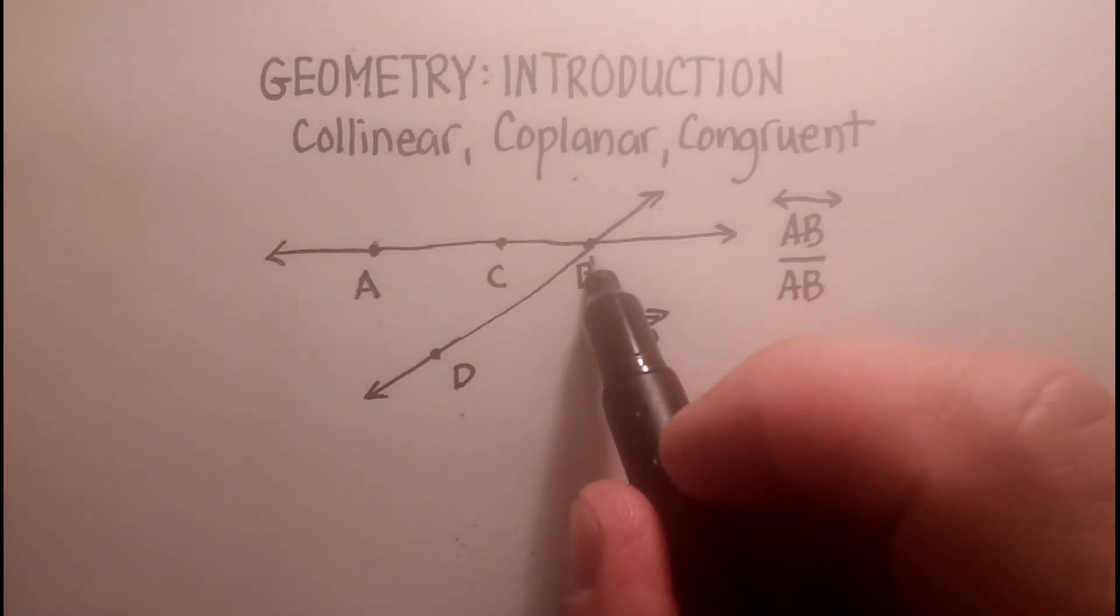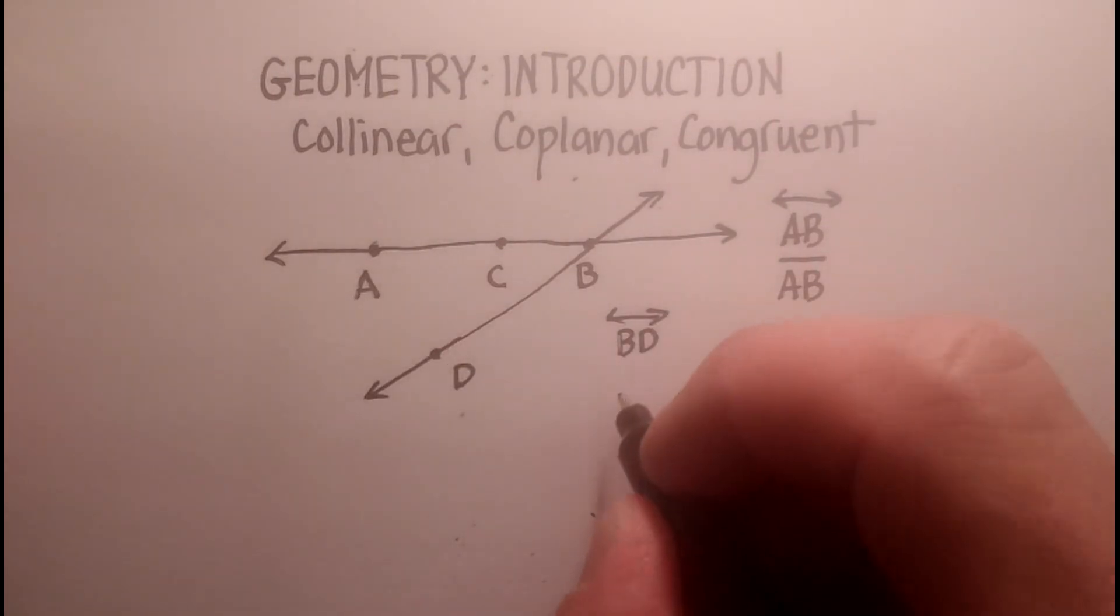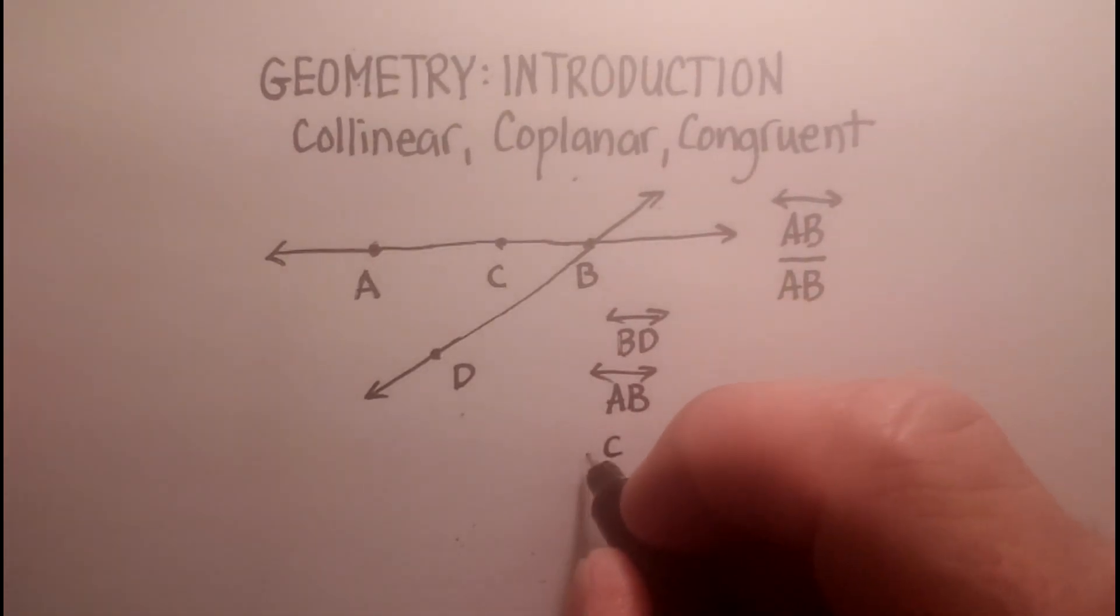You could say point B is collinear with point D on line BD. And point B is collinear with lines A and C on line, remember you can do this, just need two of these points. So you could say AB, or you could say even line AC.